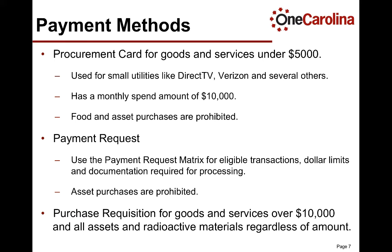Assets are defined as furniture, fixtures, and equipment that has a value of $5,000 or greater and a useful life of over two years. The payment request is used for many items that are not allowed with the P-card. Use the payment request matrix for a listing of all eligible transactions, the approved dollar limits, and the documentation that must be submitted along with the payment request for processing. Submitting a payment request without the proper documentation will delay processing of the payment. Note that assets cannot be paid using a payment request.